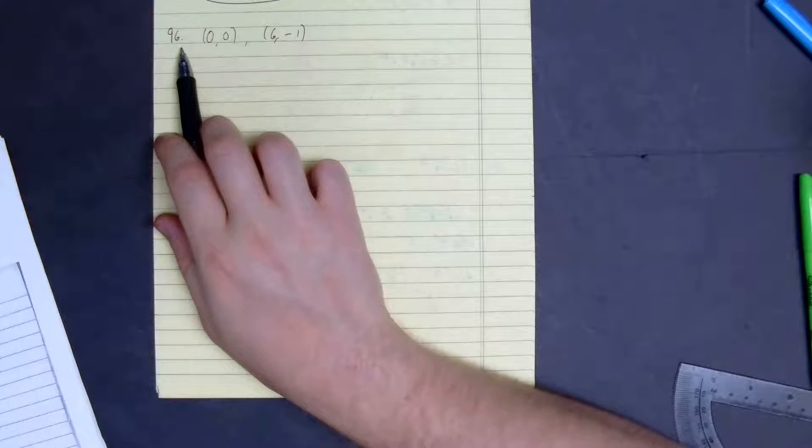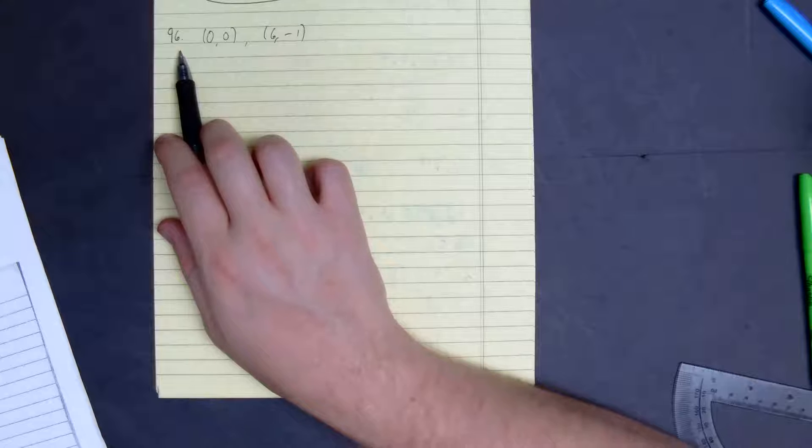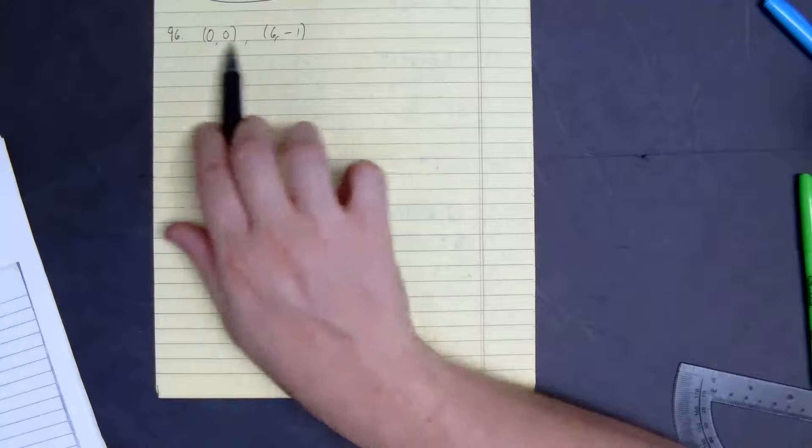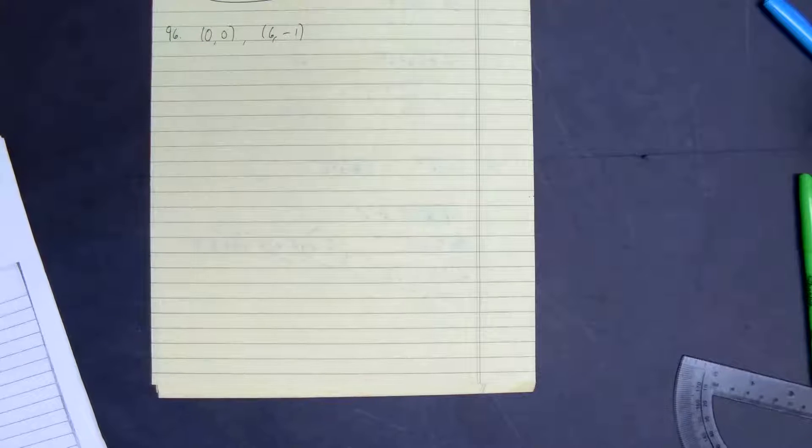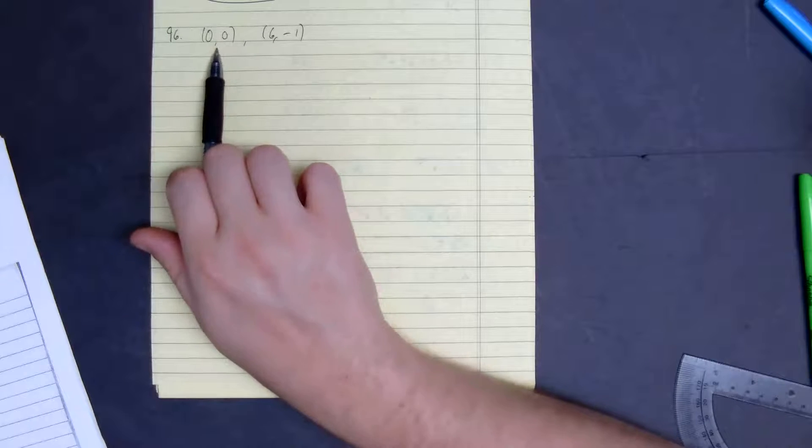Number 96 wants us to write an equation in slope-intercept form of a line that passes through these two points. So right away, I noticed that we have our y-intercept at 0, 0.